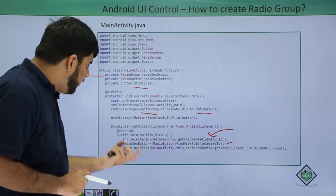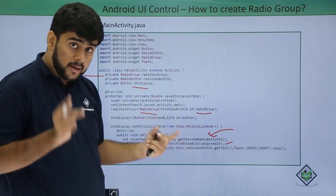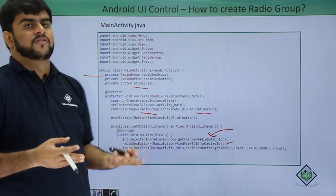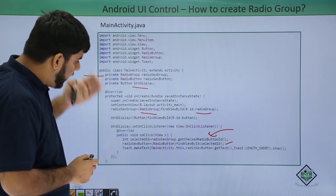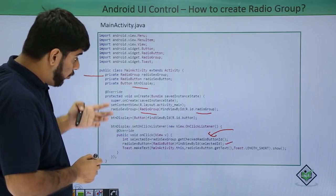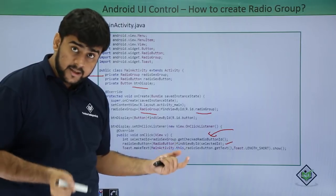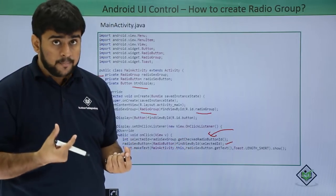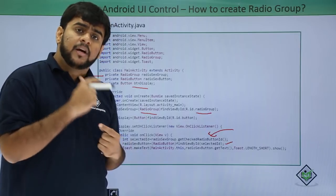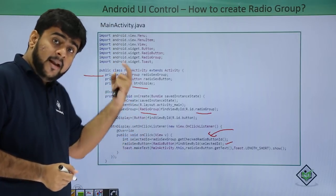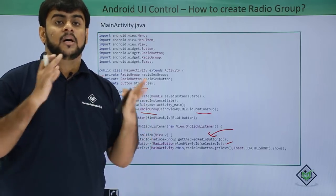We pass that id into findViewById and save it in radio6Button. Then I use a Toast and get the text of radio6Button, printing it to the user saying that they have selected this option. To summarize: I made objects of the radio button, the radio group, and the button. On click of the button the onClick method is activated. I first find which button in the group has been clicked, save its id as selectedId, pass it into findViewById, typecast it to a radio button saved in radio6Button, and in my Toast I simply call radio6Button.getText() to show the text of the clicked button.